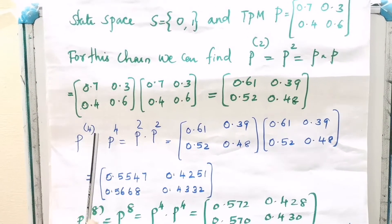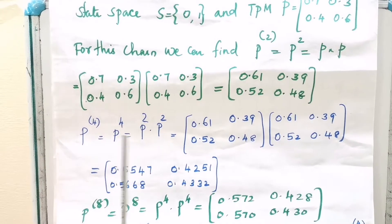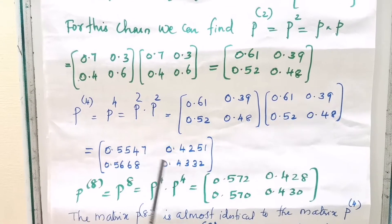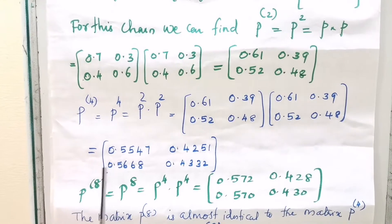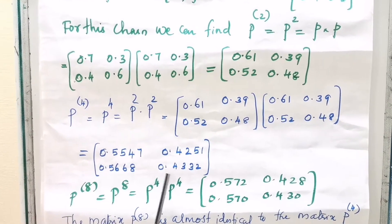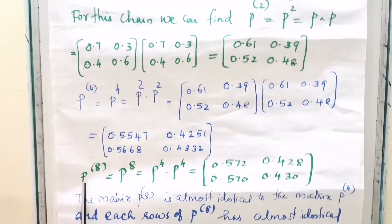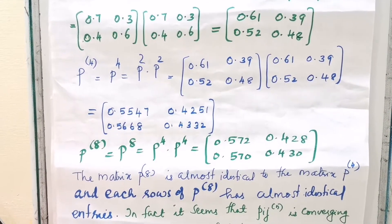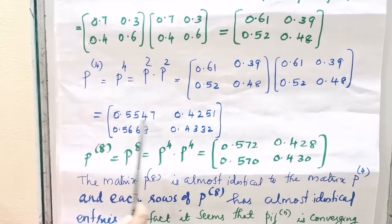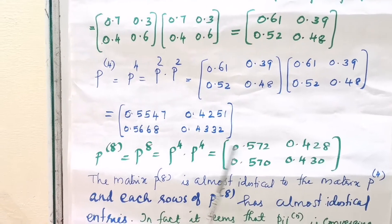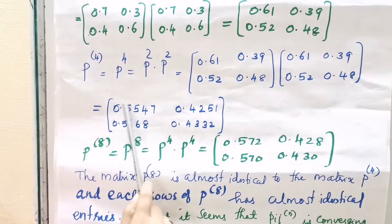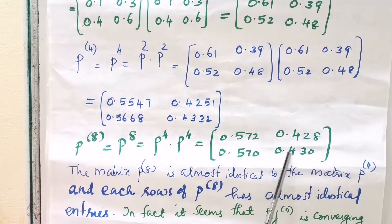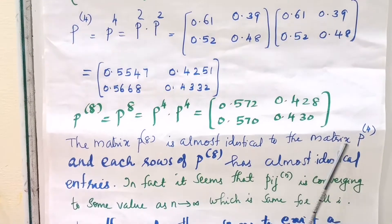Then let's consider P⁴, that is P² × P², and we get the matrix 0.5547, 0.4251, 0.5668, 0.4332. Again, let's consider P⁸, that is P⁴ × P⁴. Please look at the results: we have approximately 0.55, 0.57, 0.5, 0.5, 0.5657, 0.4. The matrix P⁸ is almost identical to the matrix P⁴.